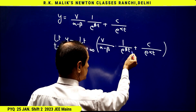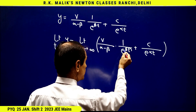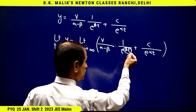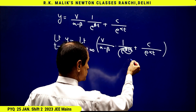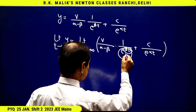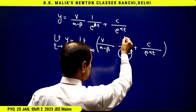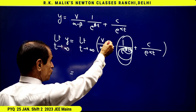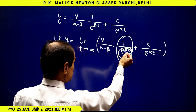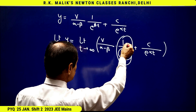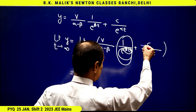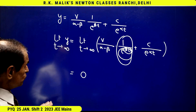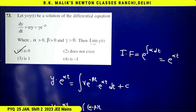Because beta is positive, as t tends to infinity, e to the power beta t tends to infinity, so the first term tends to zero. Similarly, e to the power alpha t tends to infinity, so c upon e to the power alpha t also tends to zero. Hence the final answer is zero, therefore the first choice is the correct choice.